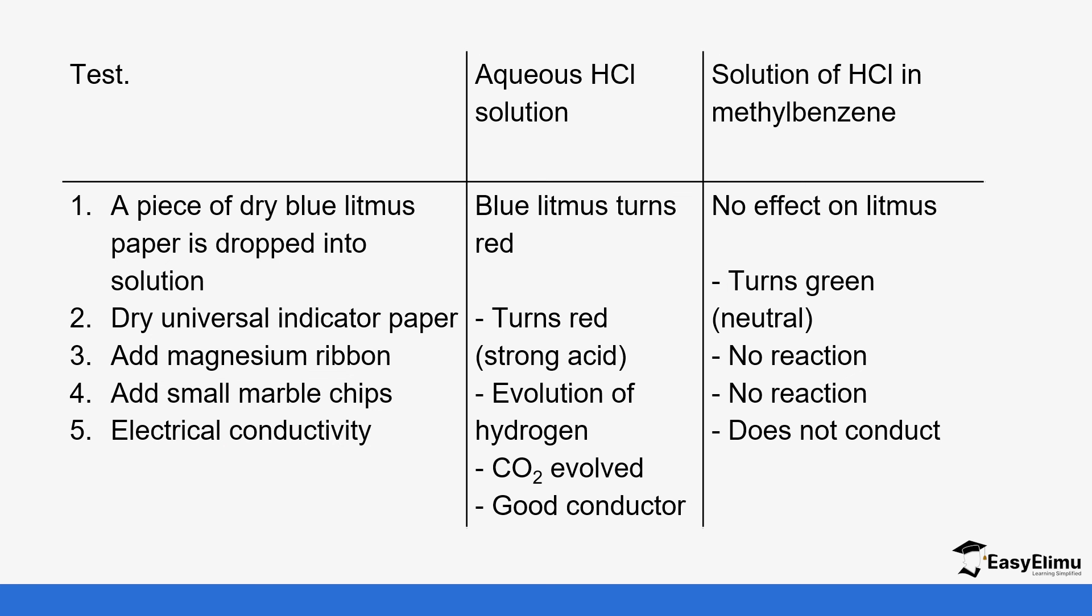These tests include litmus paper, indicator, magnesium, marble chips and conductivity. It was noted that the aqueous solution of HCl turns blue litmus paper red, meaning it shows acidic properties. It turns the universal indicator red, also showing its acidic properties. There is evolution of hydrogen gas when it reacts with magnesium and carbon dioxide when it reacts with marble chips. It was noted that it conducts electricity.